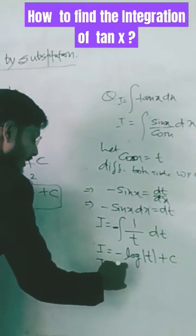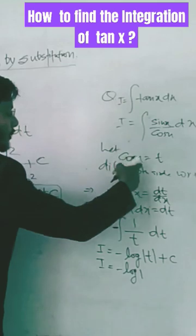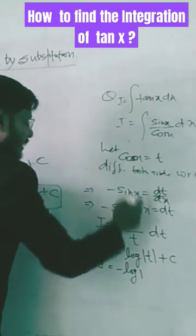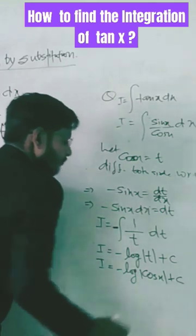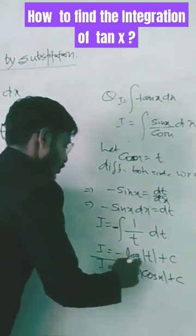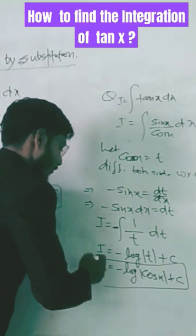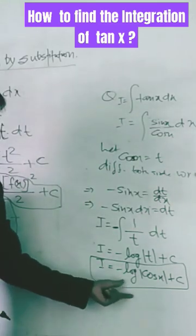Now the actual value of t can be written here. It is equal to minus log mod, the value of t is cos x, we will put cos x here plus c. This is the actual integration of tan x.